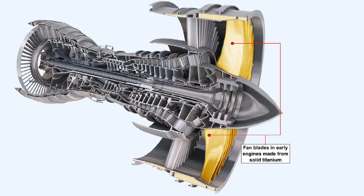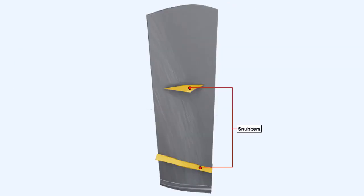The high bypass ratio engines LP compressor blades, more commonly known as the fan blades, were manufactured in early engines from solid titanium because titanium combines the properties of strength and lightness. A low blade weight is essential if the fan is to be able to withstand the out of balance forces which would occur if a fan blade failed.